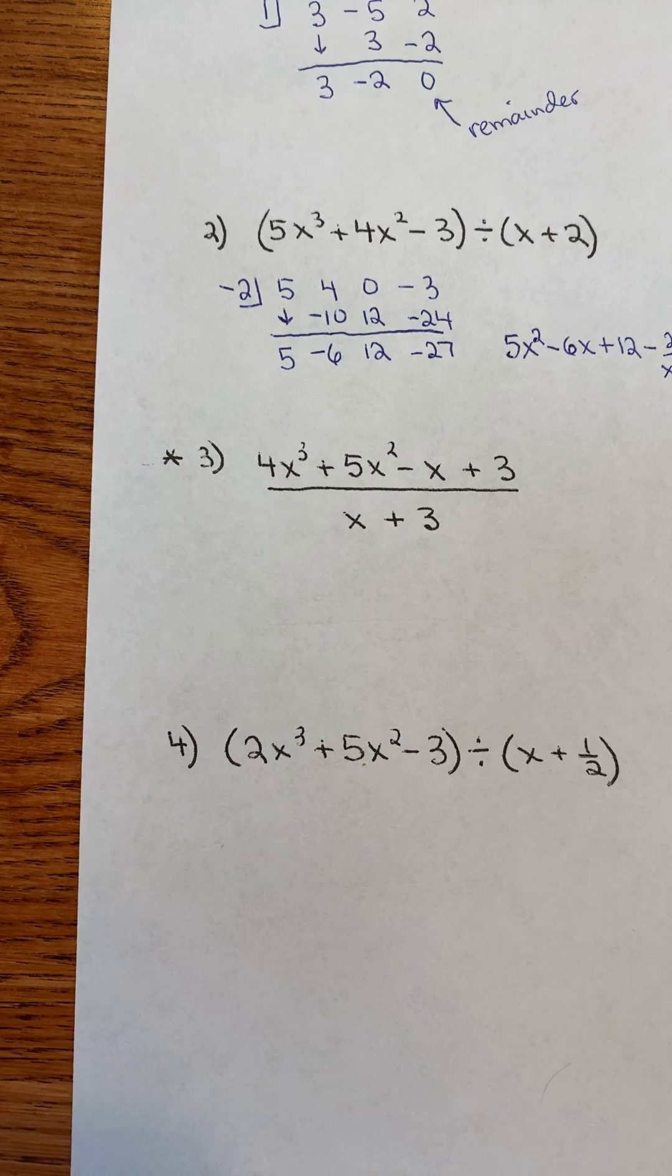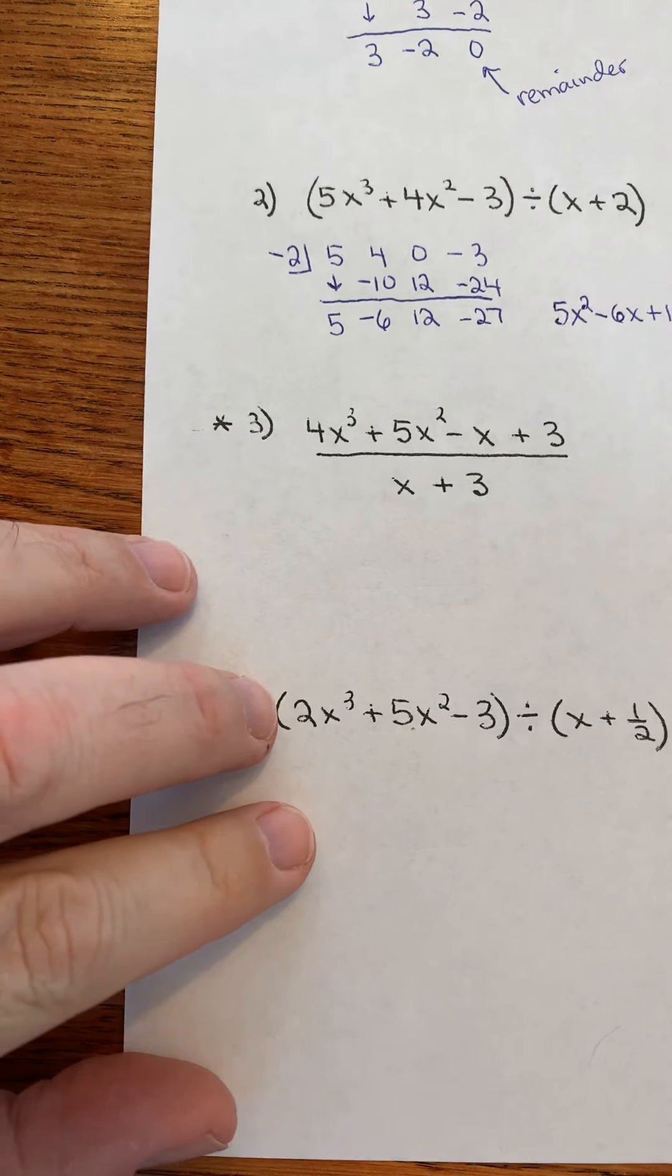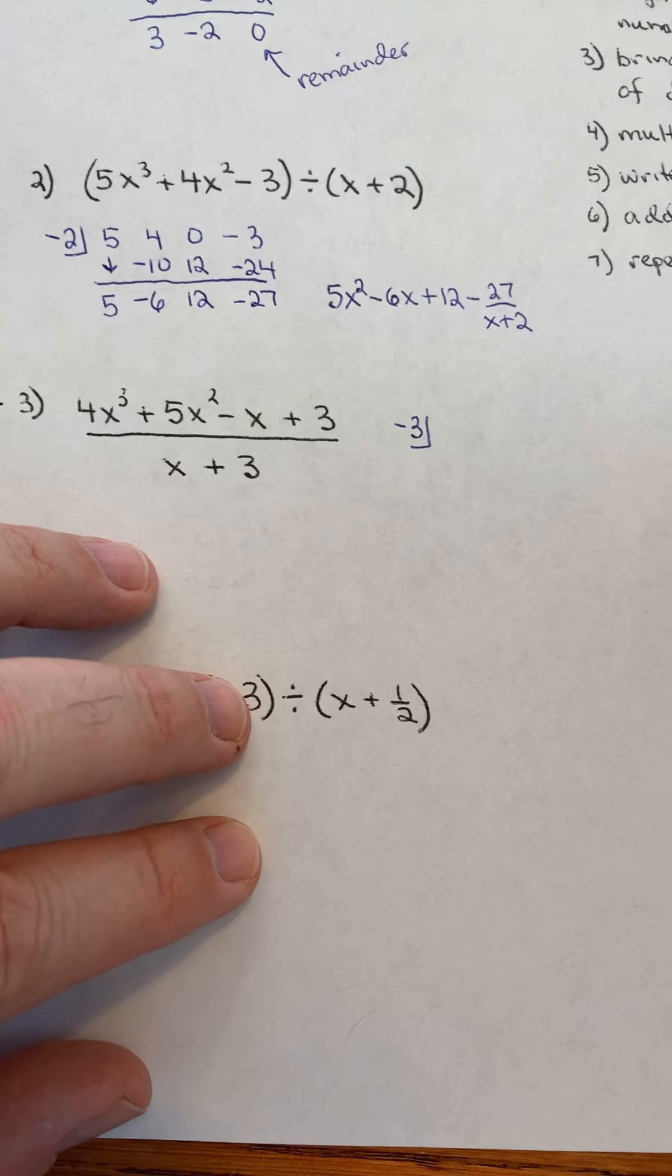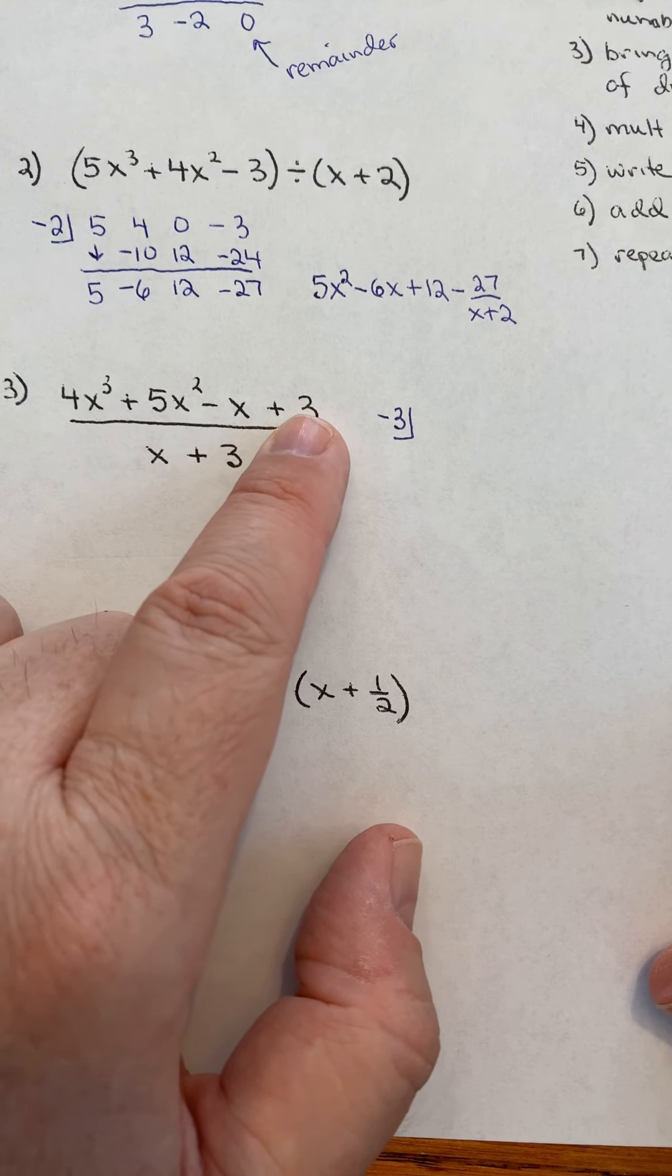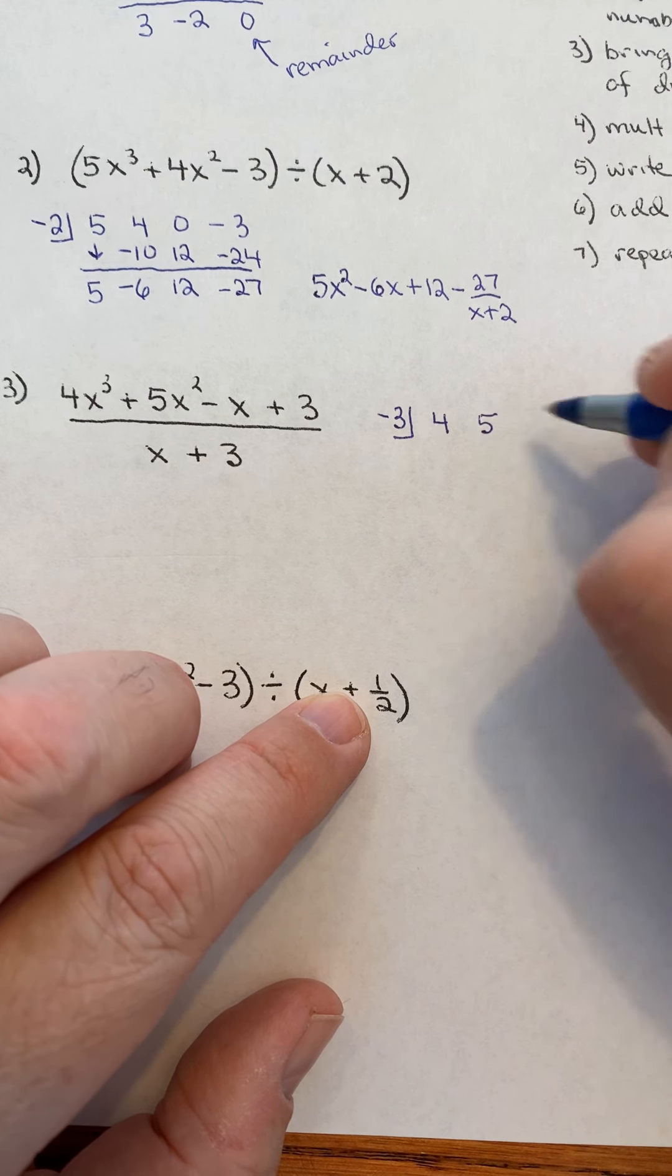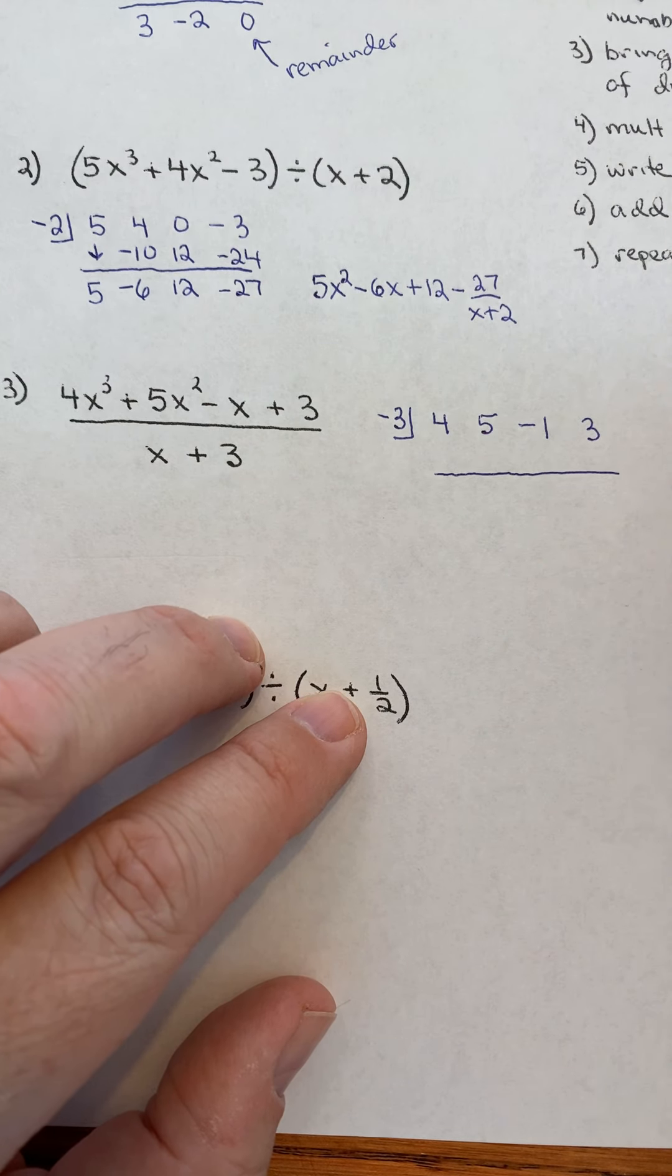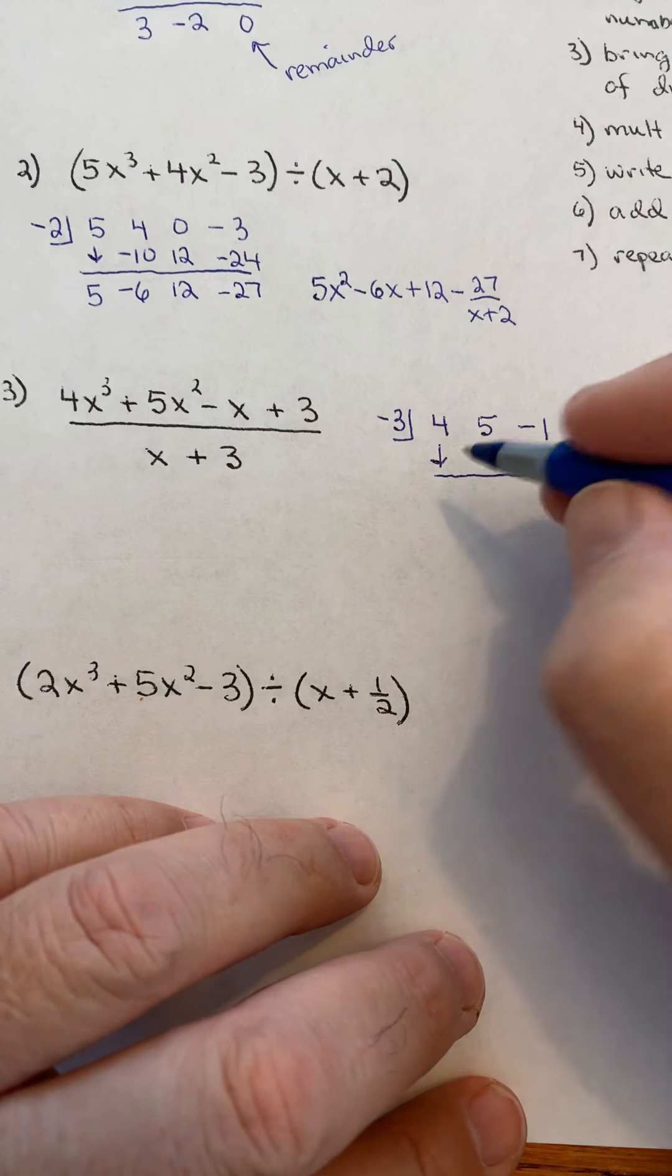Now, if you want to try one of these, when you're working on your own, you can always just pause the video. I'm playing it during class. So, I'm going to take the opposite of that constant term. And then, I'm going to write down the coefficients in the dividend. There's no missing terms. So, I'm just going to write down 4, 5, negative 1, and 3. Very important that you keep the signs there. Bring down this first term. You can go through the notes. It tells you exactly what to do.